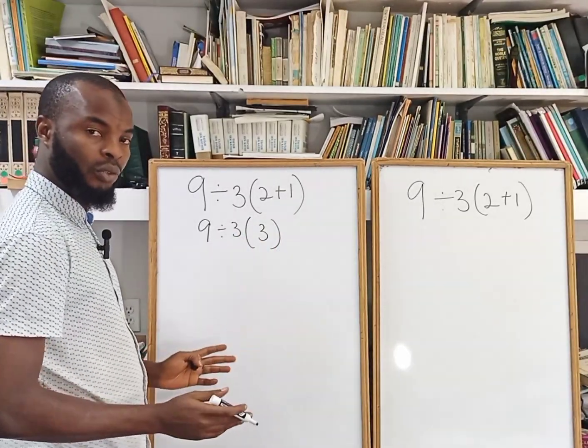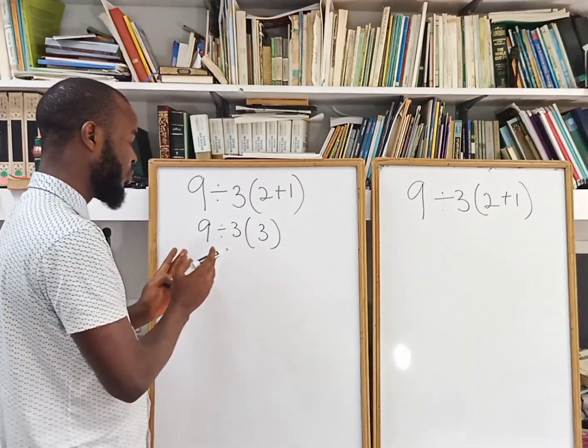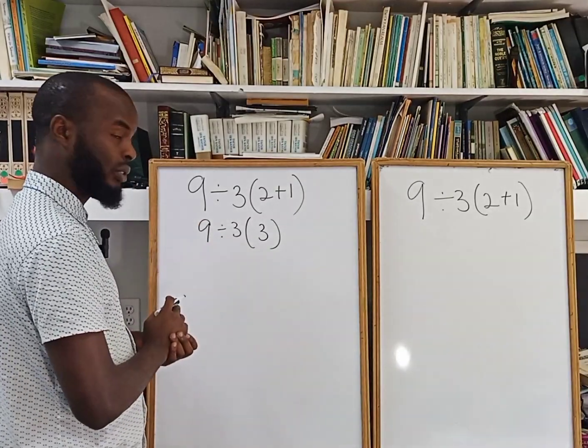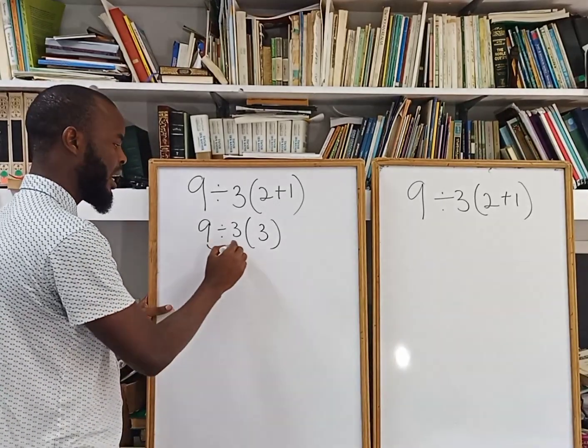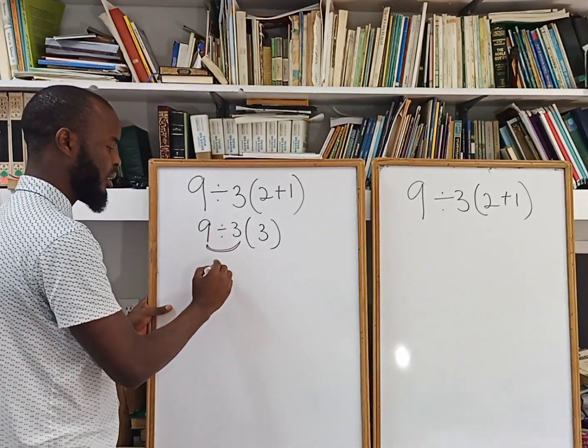Then after solving the bracket, then you move to what? You move to the divisional sign, which is the next one. So 9 divided by 3 is going to give us 3.